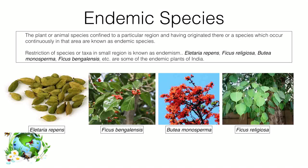Endemic species are plants or animal species which are only confined to a particular region, having originated there and occurring exclusively in that area. These are plants not found anywhere else in the world, making them endemic to India. Examples of endemic plants of India include Elaichi, Bargad, and Peepal.